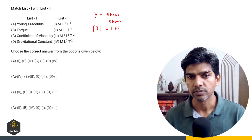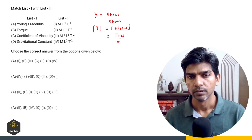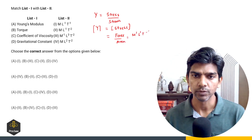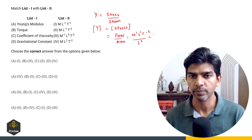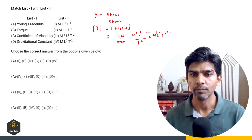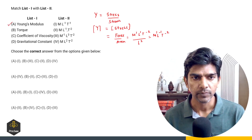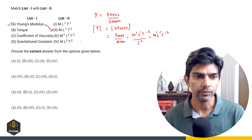The dimension of Young's modulus will be same as the dimension of stress. Stress is force upon area. The dimension of force is M raised to power 1, L raised to power 1, T raised to power minus 2. The dimension of area is L raised to power 2. So that gives M raised to power 1, L raised to power minus 1, T raised to power minus 2. So A corresponds to 2.